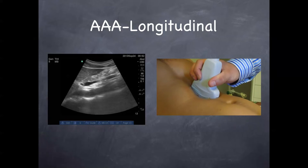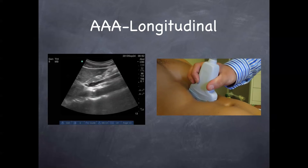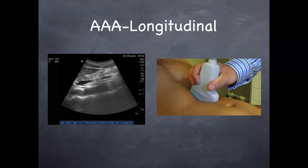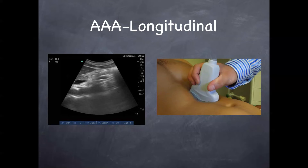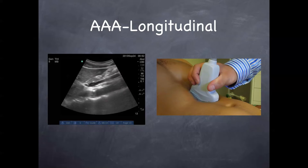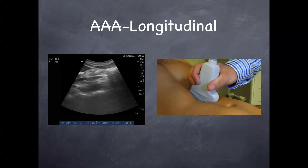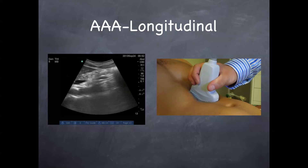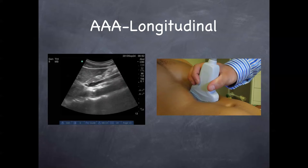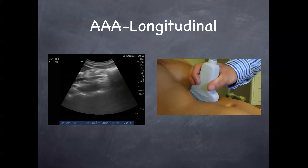We're going to be talking about aorta first. With the aorta, it's important — we always stress this — you want to get a long axis view as well as a short axis view. Long axis is nice because it'll catch those saccular aneurysms that you'll miss with a transverse view. The transverse view is nice because you really need to go along the aorta all the way down to the bifurcation, and the longitudinal view doesn't necessarily allow you to do that. The transverse view also will give you more accurate measurements when measuring the size and diameter of the aorta.